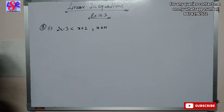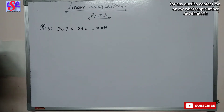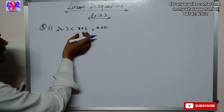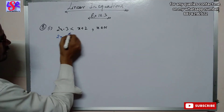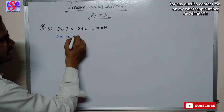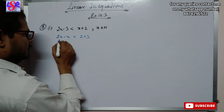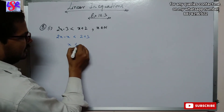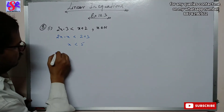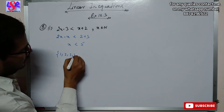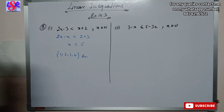Now let's move to question number 8. We have a question which we have to solve and find the solution set. We transpose variables and constants. So 2x minus x is less than 3 plus 2, giving x is less than 5. As x is a natural number, the answer is 1, 2, 3 and 4.